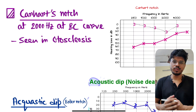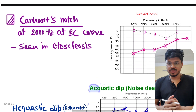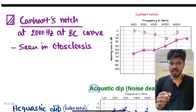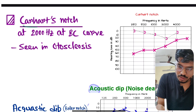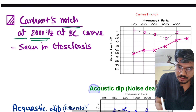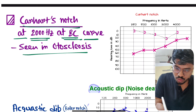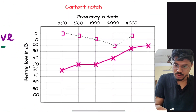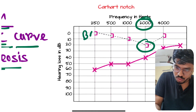In this video we talk about Carhart's notch and acoustic notch. Carhart's notch is seen in otosclerosis, typically in the bone conduction curve at 2000 Hz — bone conduction only. Here is 2000 Hz and there is a dip in bone conduction.